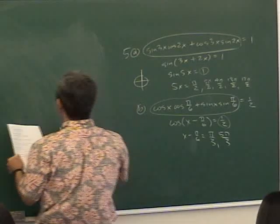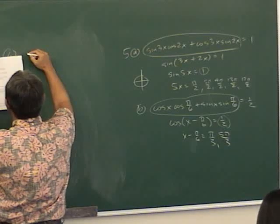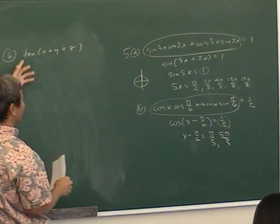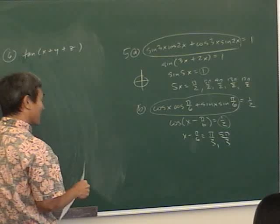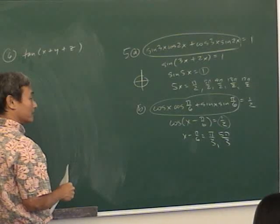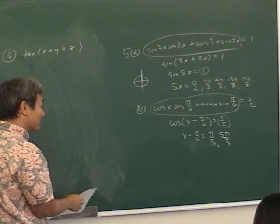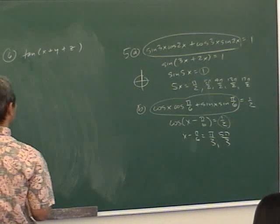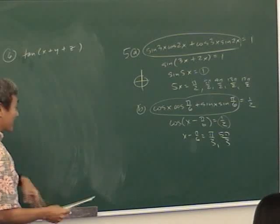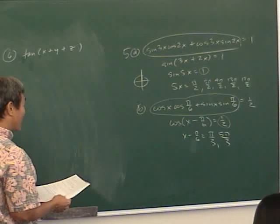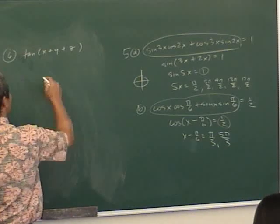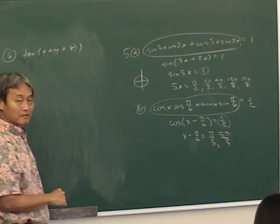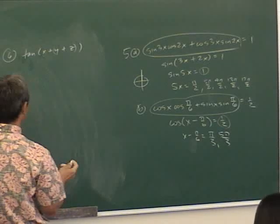Number 6 — math team people just look at this and get 1. We know the identity for tangent of (something + something), but this is (something + something + something). So what do I do? Make it into (something + something) by using parentheses. Put the parentheses around x+y, or around y+z — it doesn't matter; it's going to come out the same either way.